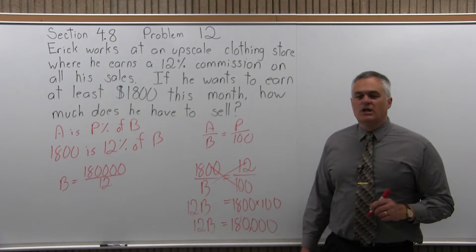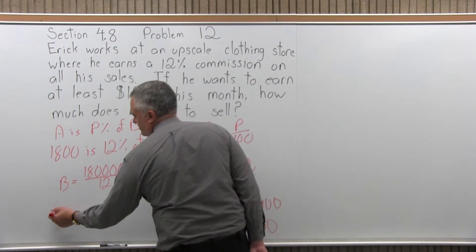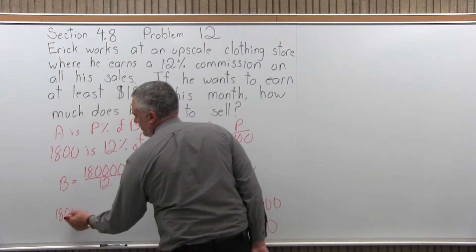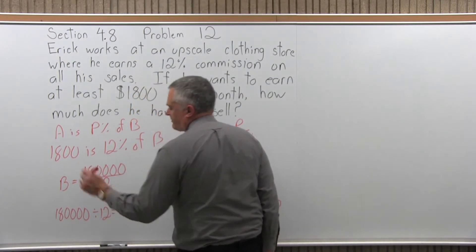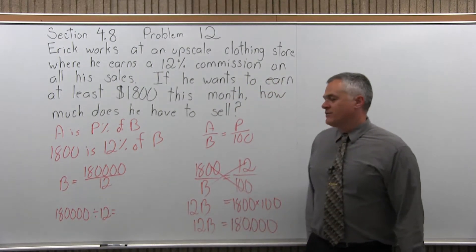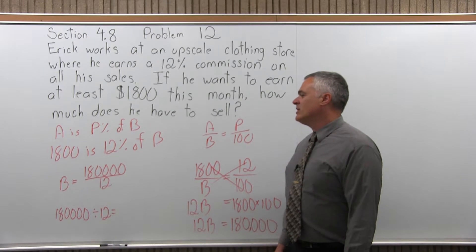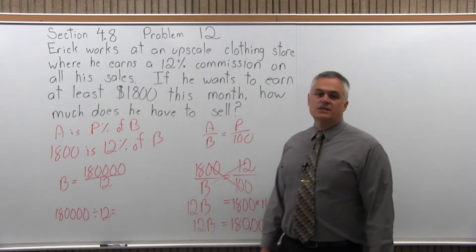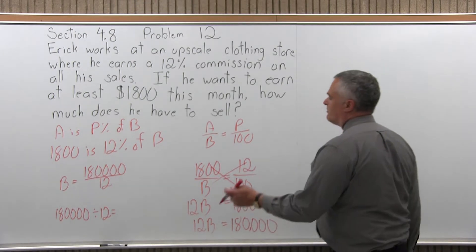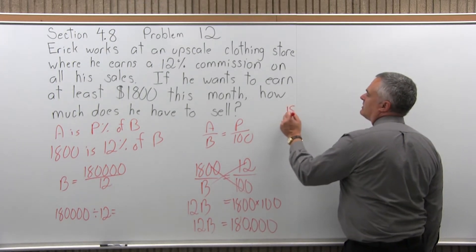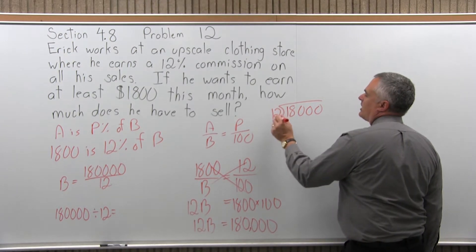If your teacher allows a calculator, simply enter 180,000 divided by 12 and you'll have your answer right away. If not, you can either reduce the fraction, which works pretty nicely, or divide it out — it should work either way. Let's try division: 180,000 divided by 12.